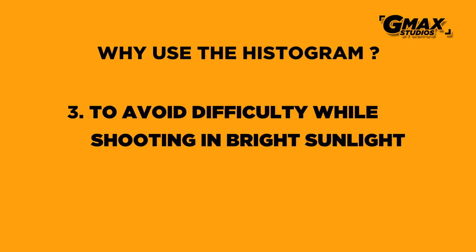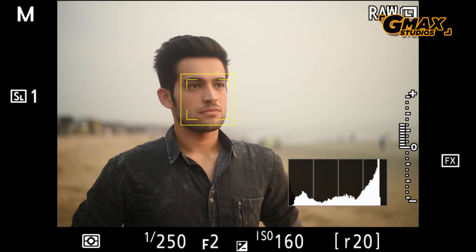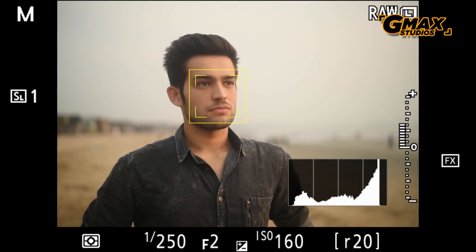Therefore, the histogram is an accurate way of finding out whether you have managed to get the right exposure or not, and whether your highlights and blacks are in control. Now there is a misconception that there is something like the perfect histogram, which kind of looks like this, but this is not true. In real life situations, sometimes your photographs will have more highlights, and in some situations more blacks.